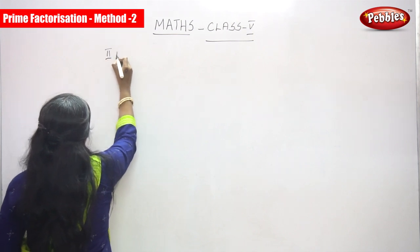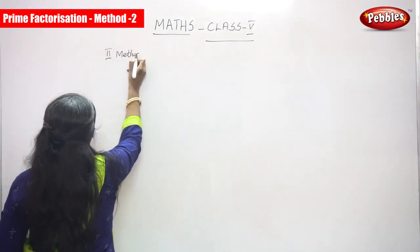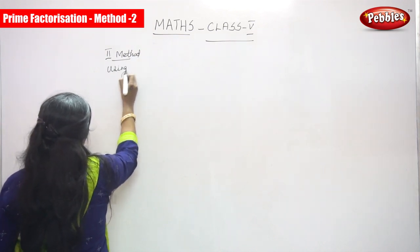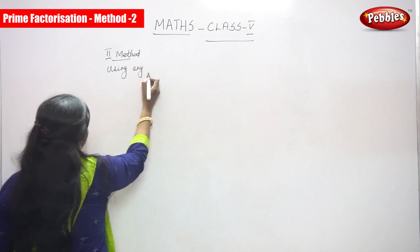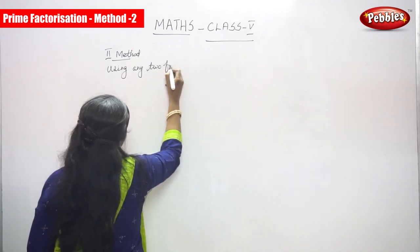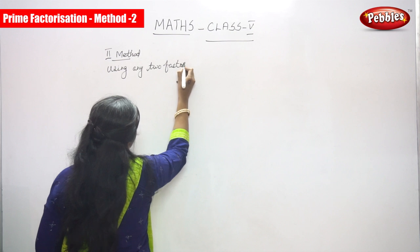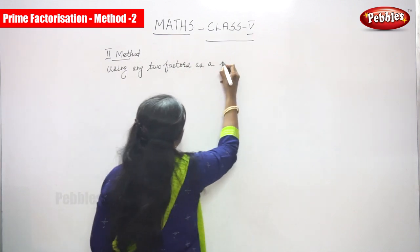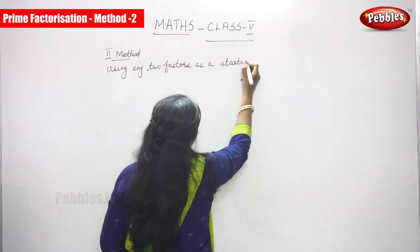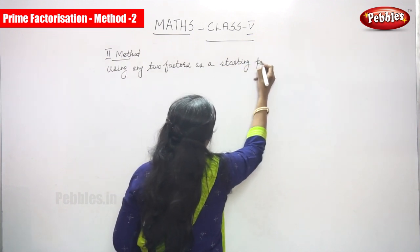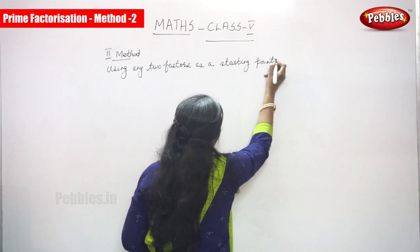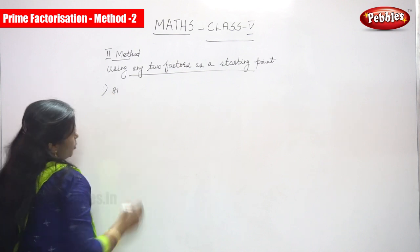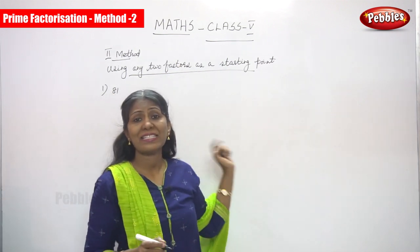Second method. So, here we have seen the next number of factors. So, in this, the first sum is 81. So, what is the number? This is 81.